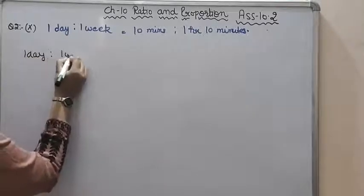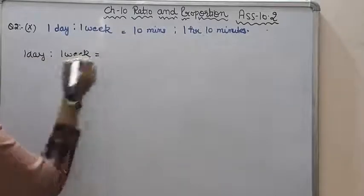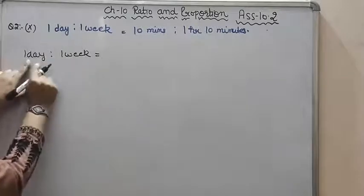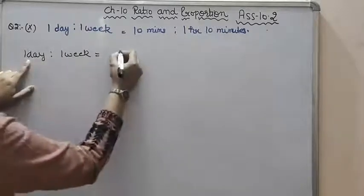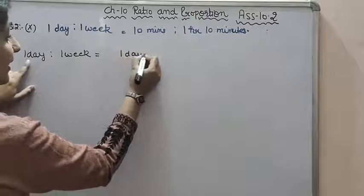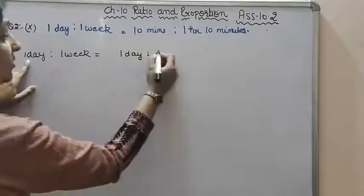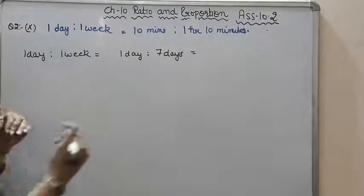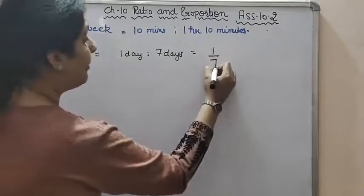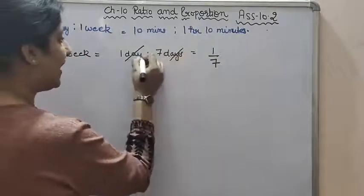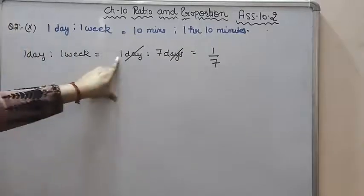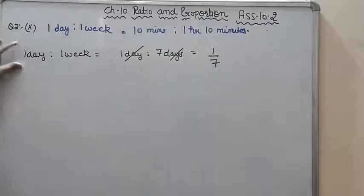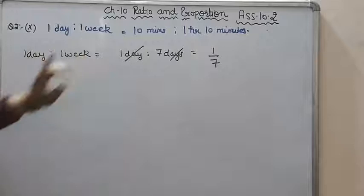So let's start solving it. One day is to one week. That means, we have to convert to which? Days, because day is the smaller unit. So one day is to one week, which equals seven days. So our ratio's value is one upon seven. Days cancel. So one by seven is the value of first ratio.